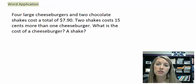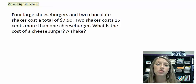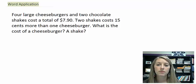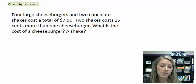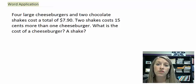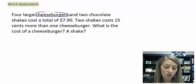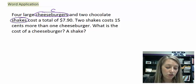The first step is to set up your system of equations, and the second step is to solve it to figure out the cost of each item. I suggest you pause the video and try this one on your own. When setting up the equations, you might use X and Y, but I suggest using variables associated with the problem. I'm going to use C for cheeseburgers and S for shakes.